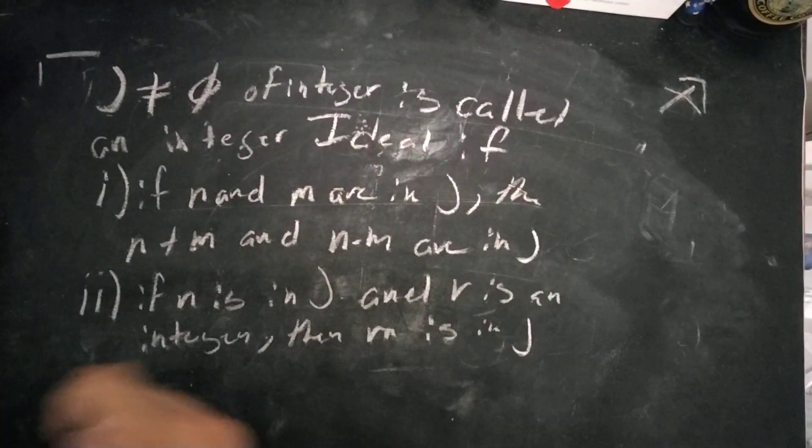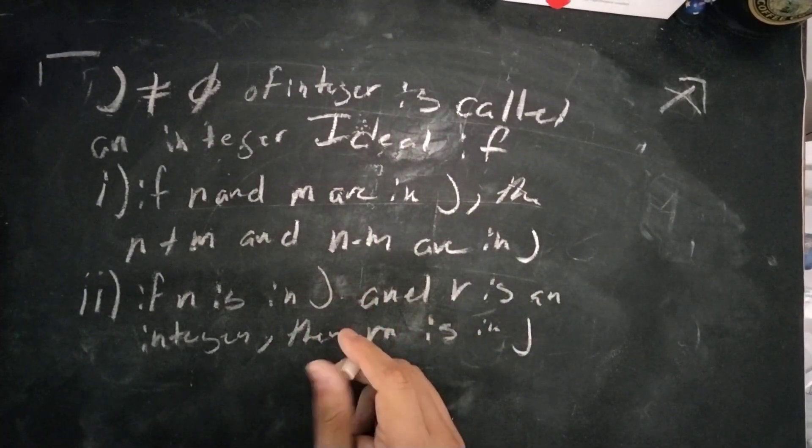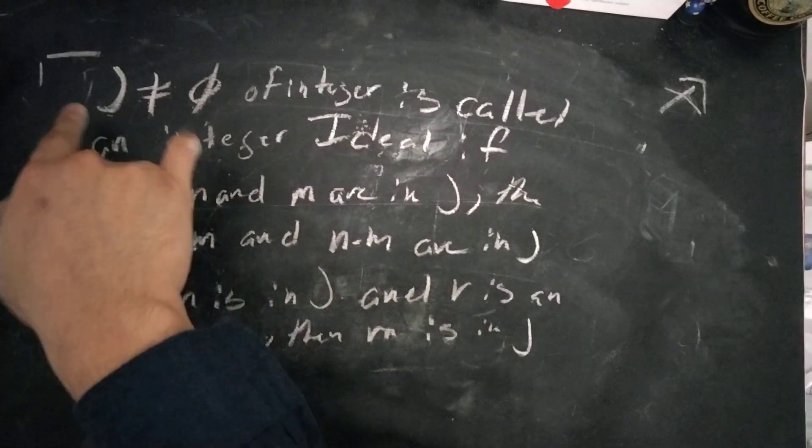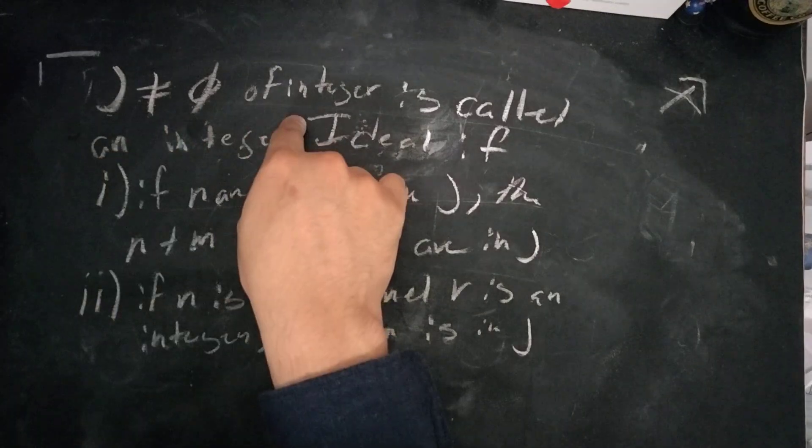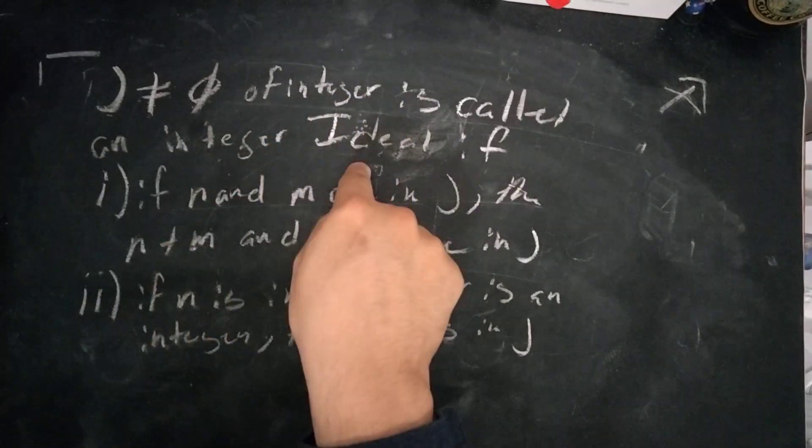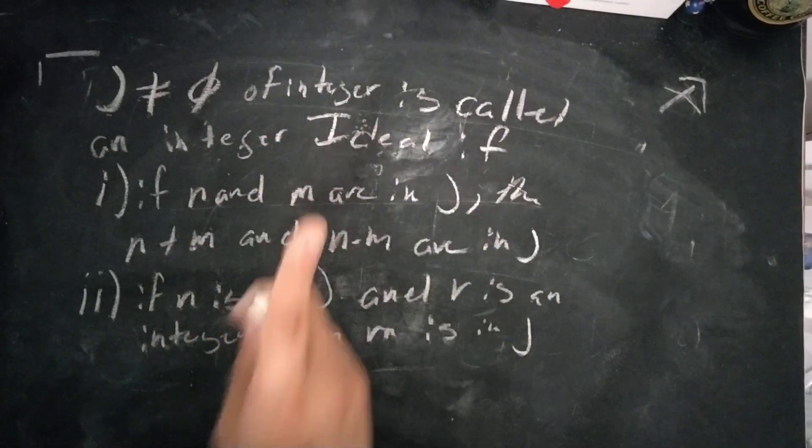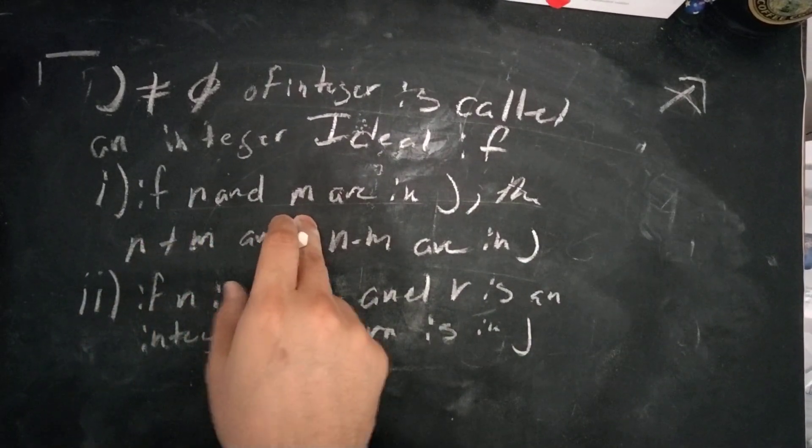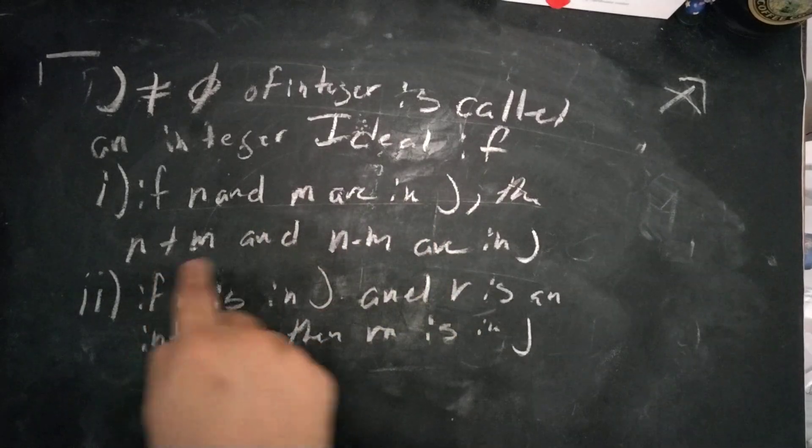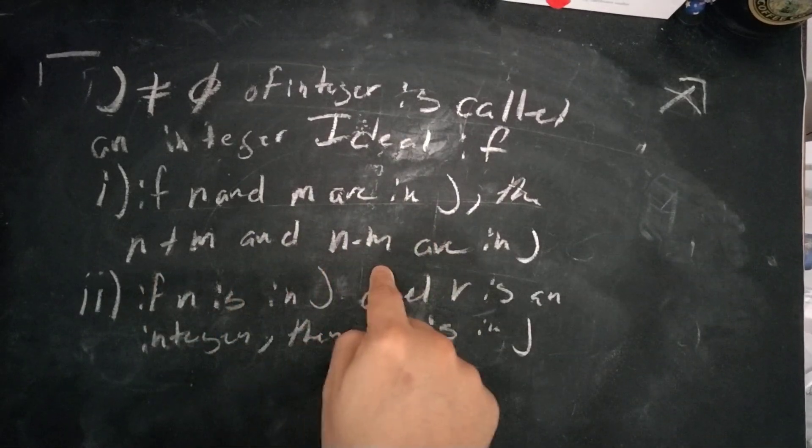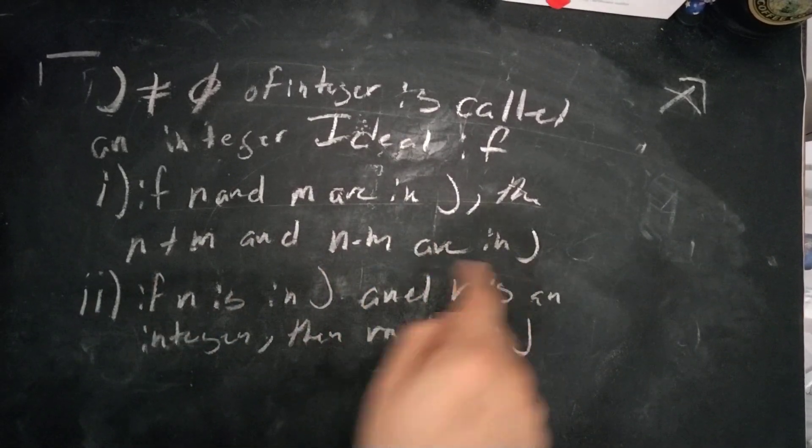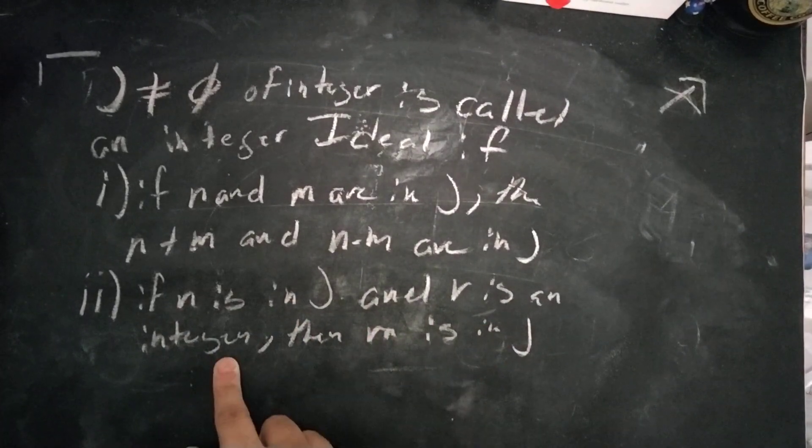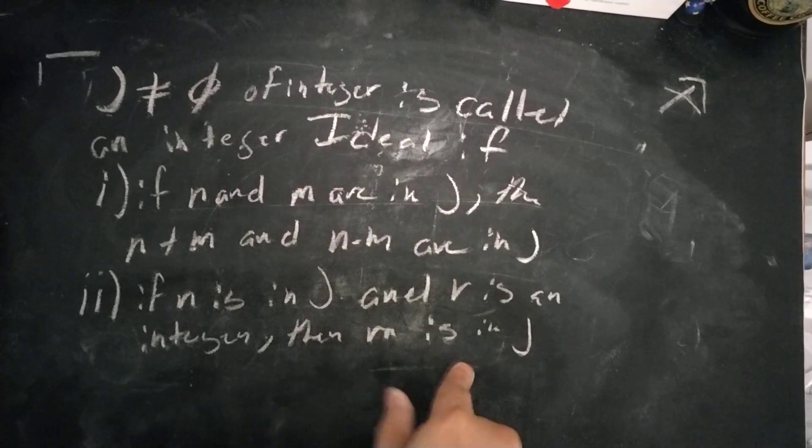Problem goes as follows: we're given the definition of an integer ideal. If J is a non-empty set of integers, it's called an integer ideal if the following two conditions are held. If n and m are in J, then m plus n and n minus m are in J. If n is in J and r is in J, then rn is in J.